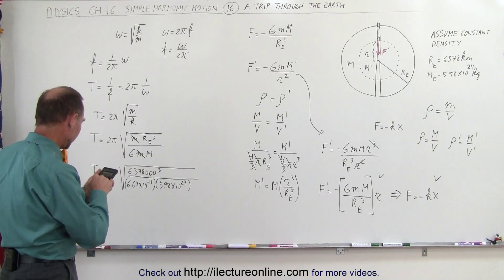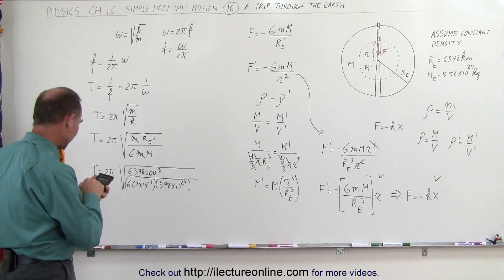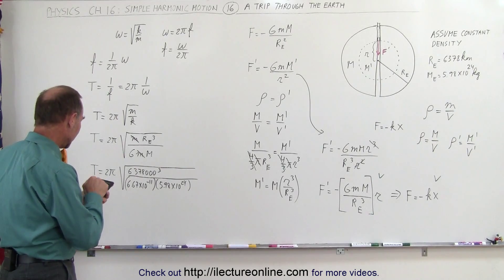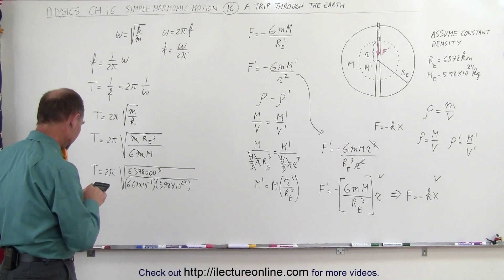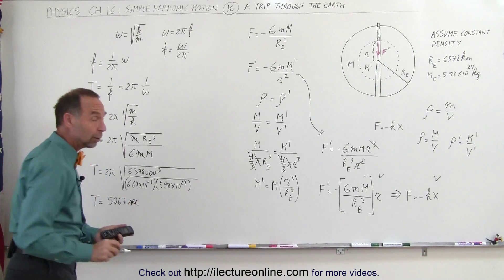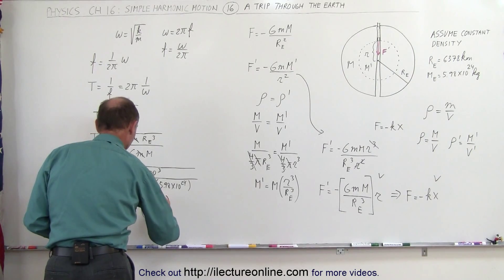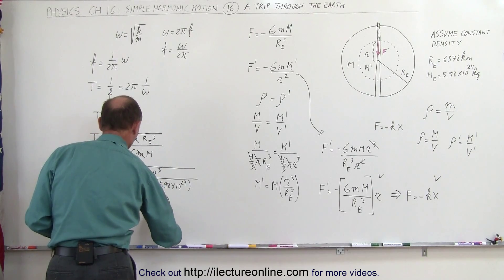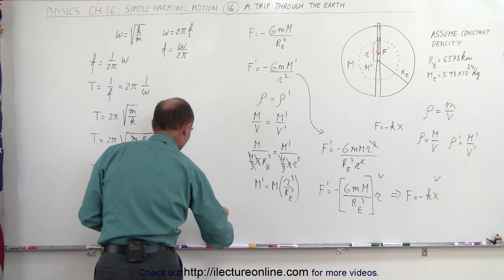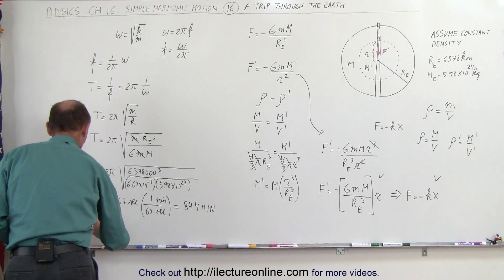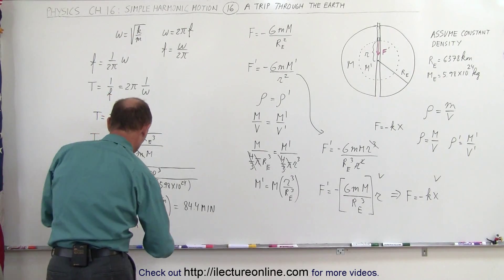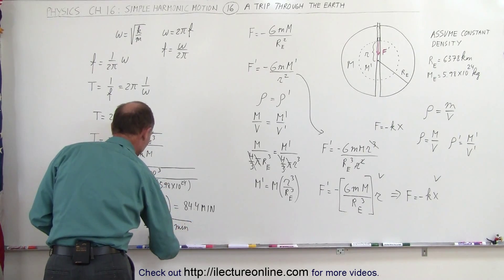Computing: 6,378,000 cubed, divided by 6.67e-11 times 5.98e24, take the square root, then multiply by 2 pi. We get a period of 5,067 seconds. Converting to minutes — dividing by 60 — gives 84.4 minutes. Since we only want the one-way trip time, T divided by 2 equals 42.2 minutes for a trip to the other side of the world.